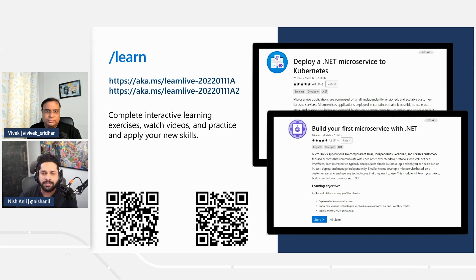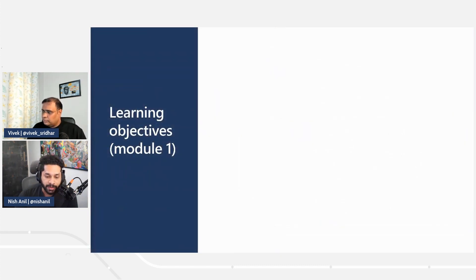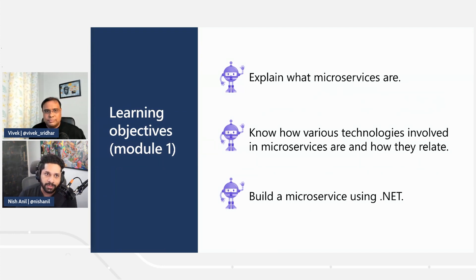This is going to be the first in a series of microservices — we have eight sessions lined up, so don't forget to tune in every Tuesday. Some topics will go more in-depth into cloud-native technologies like resiliency and service meshes. Today, we'll focus on cloud-native tools like Docker and Kubernetes. The important things to learn today are what microservices are, the technologies involved like Docker and Kubernetes, and how to build a microservice endpoint in .NET.